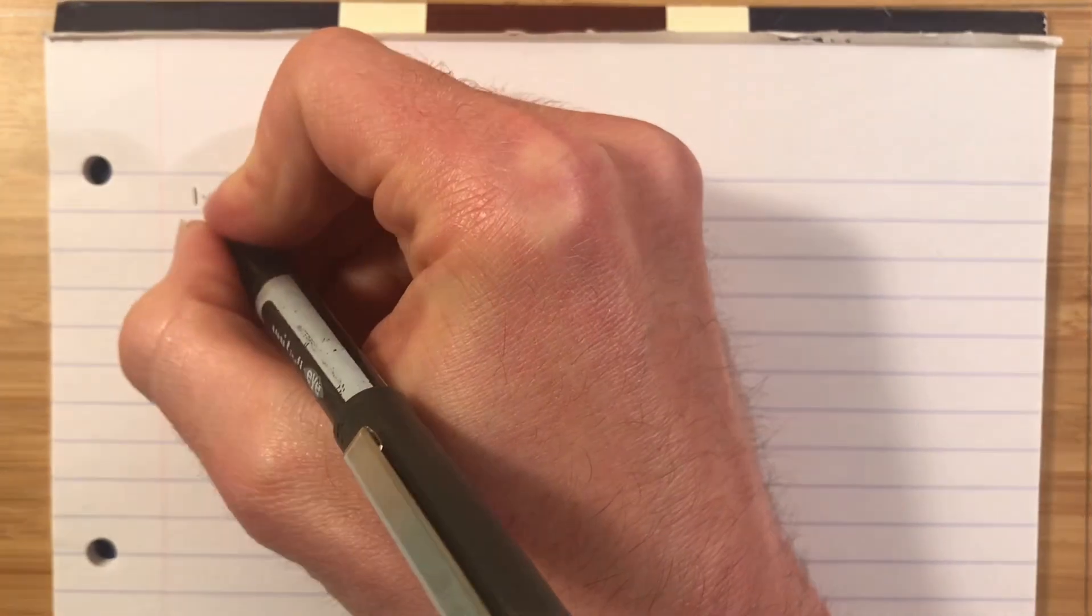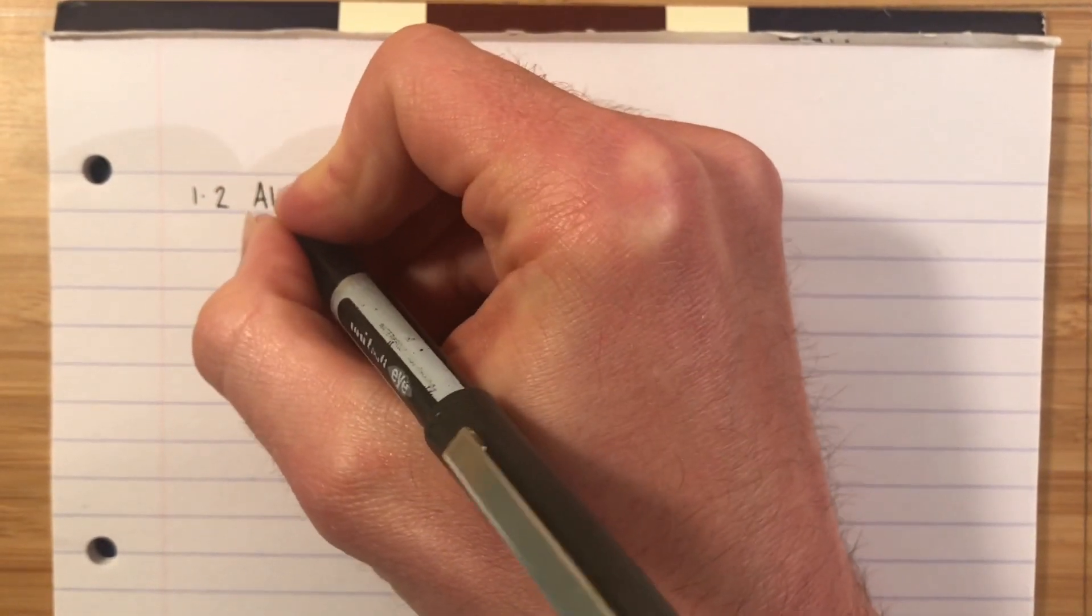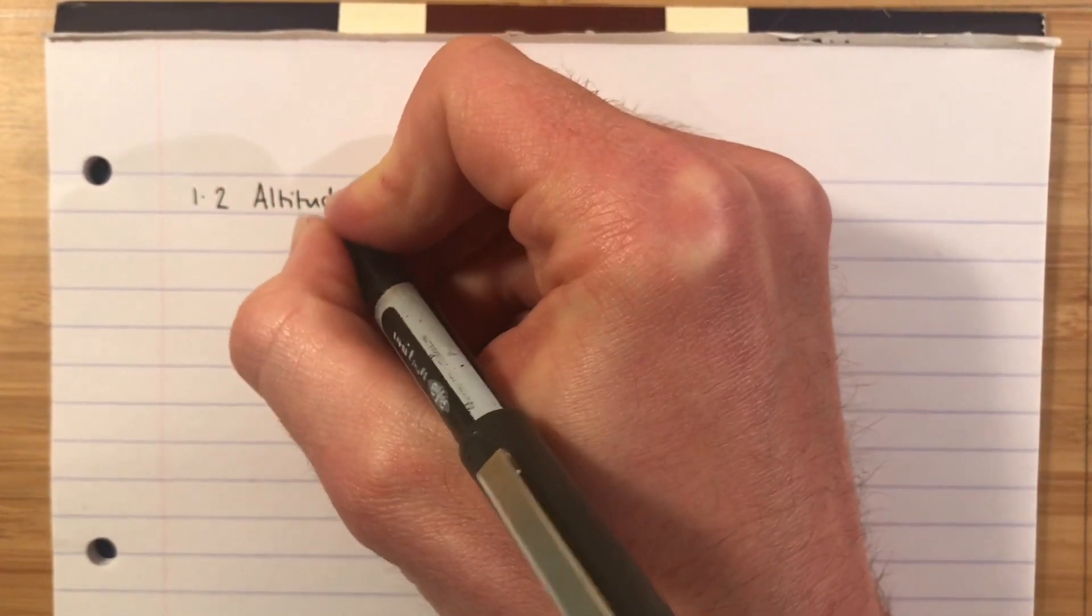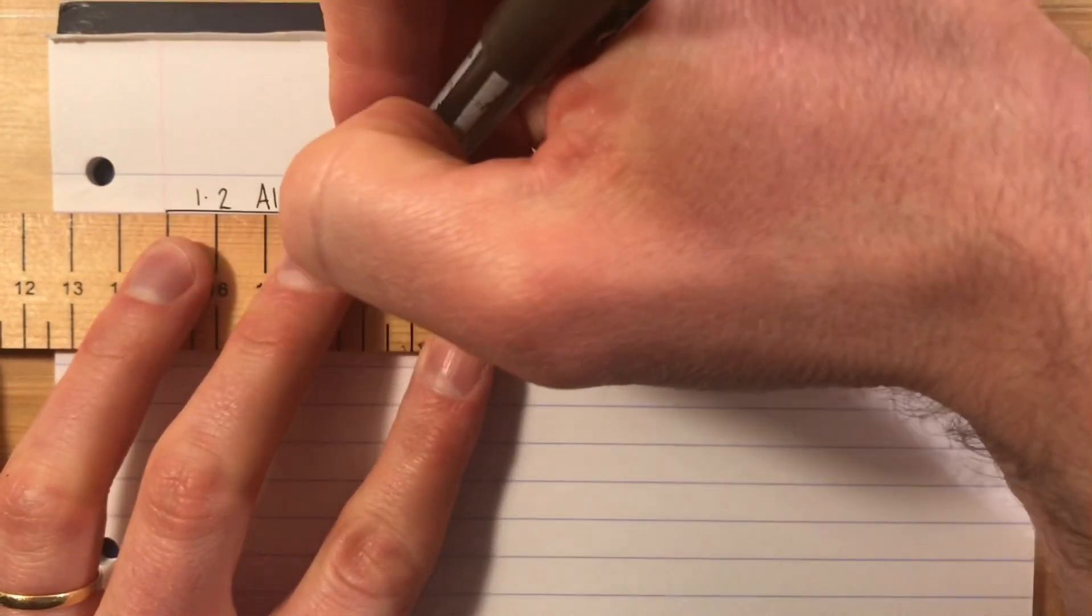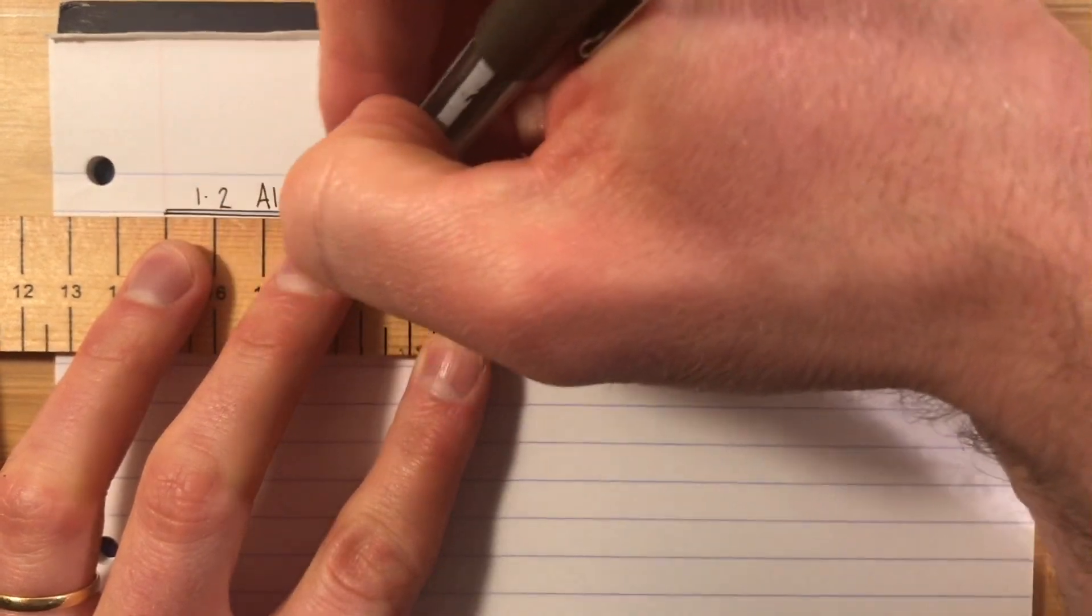So section 1.2 is altitudes. And again we will start by writing a very simple definition of what an altitude is.